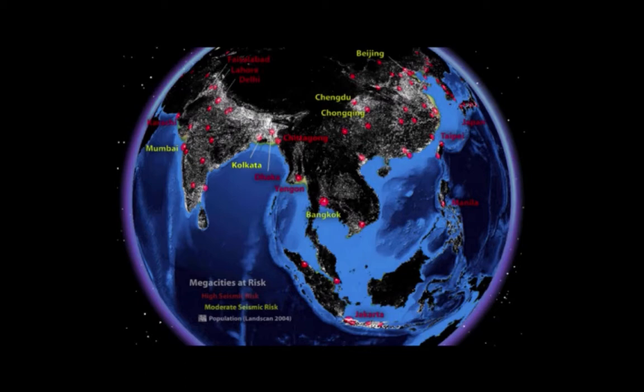If we now put cities at risk on this map, you begin to appreciate the full magnitude of the problem. The rapidly growing numbers of people living in harm's way is a colossal problem, and it's very likely that one of the red dots on this map will be the site of the million-death earthquake in our lifetime.